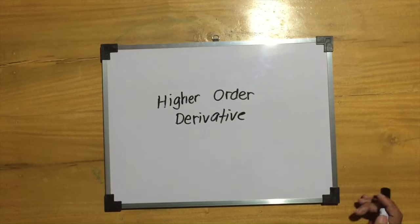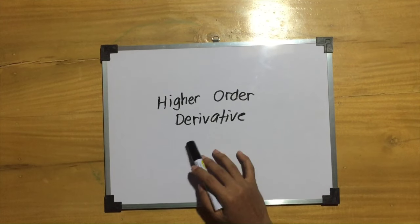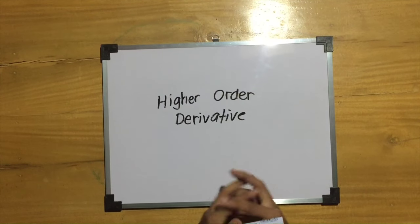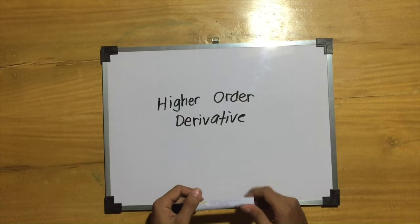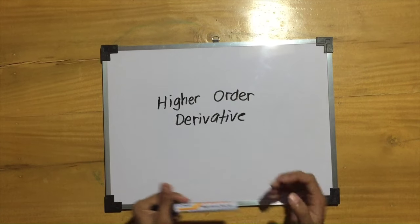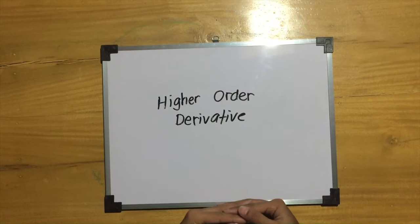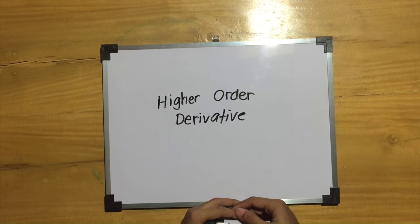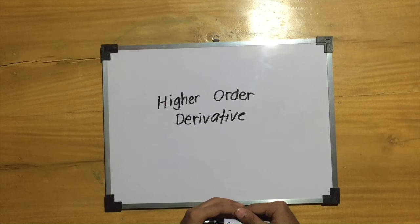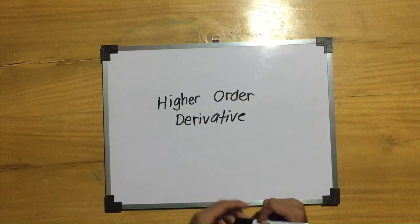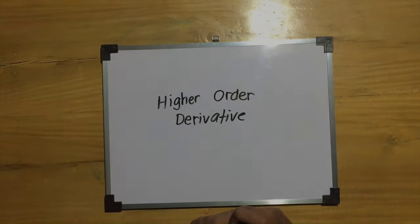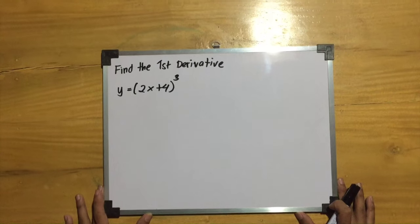Now let's move on to higher order derivatives. Higher order derivatives refer to the repeated process of taking derivatives of derivatives. The derivative of the first derivative is called the second derivative, and the derivative of the second derivative is called the third derivative, and so on. The derivative of y with respect to x is itself a function of x and may in turn be differentiated.